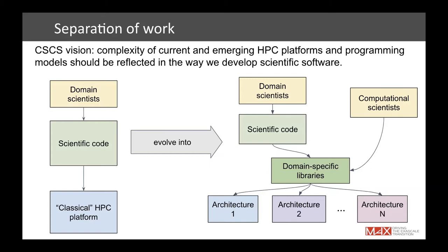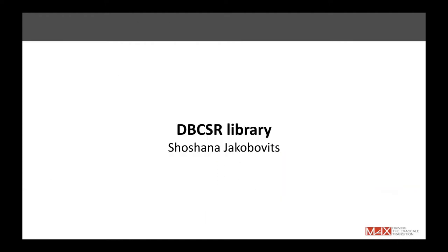At CSCS we promote a so-called separation of concerns. We want monolithic Fortran or C codes to be split into a lightweight scientific part and the rest encapsulated into libraries. With this separation, computer scientists like Shoshana, Marko, and Simon can work on the libraries without deep knowledge of the physics. Our vision is to have libraries optimized for different backends — currently GPUs, but the top supercomputer is now ARM-based and we don't know what architectures will dominate in a few years.